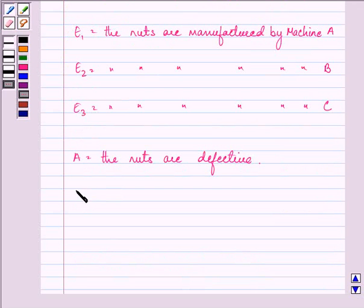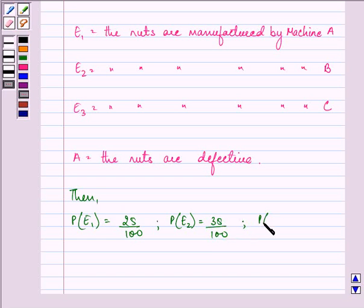Now, further, we are given probability of selecting event E1, that is the nuts are manufactured by machine A is 25%, so it is 25 by 100. Probability of E2 is given to us as 35% and probability of E3 is 40%.